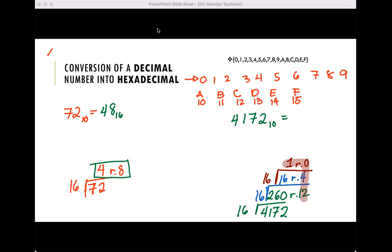And this will be our hexadecimal value: 1, 0, 4, but 12 - remember we use C for 12 - so 104C base 16.